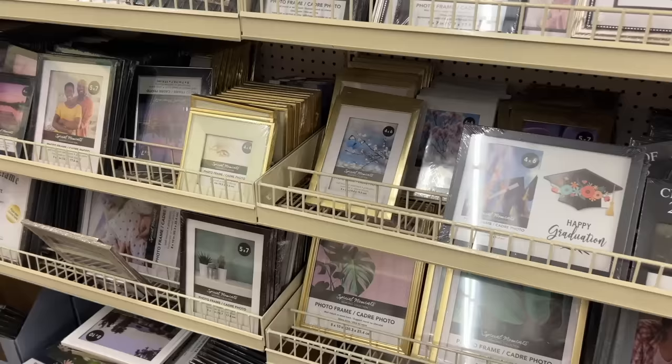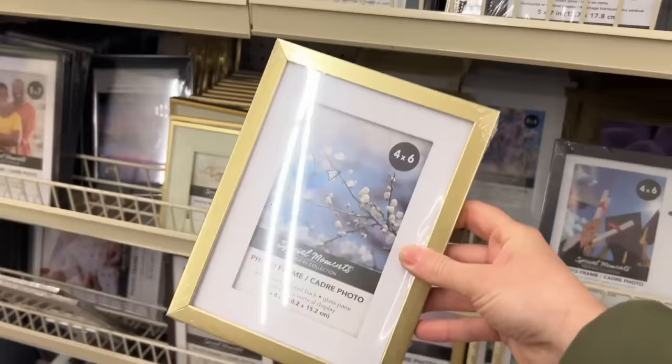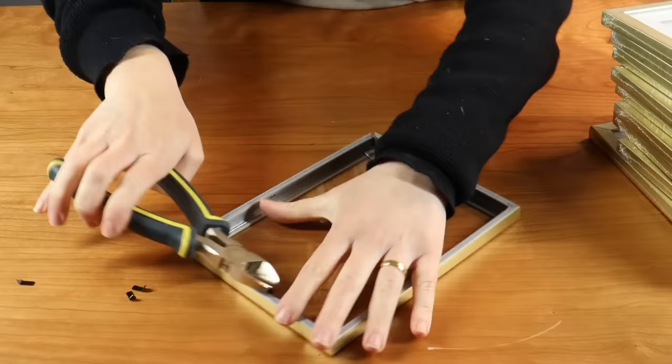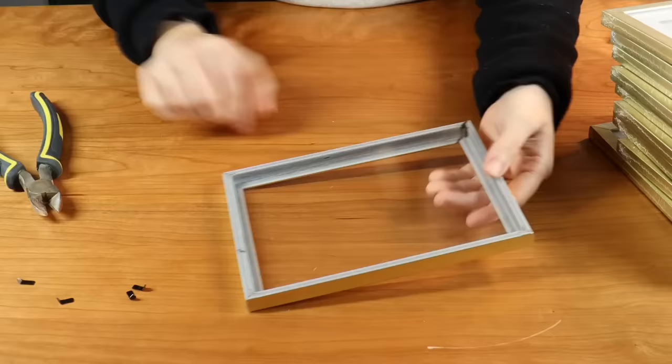The next time you're at Dollar Tree, make sure you head to their frame section and grab some of these gold frames. I'm going to come in with some wire cutters and pull out the black tabs that keep the backing on. Then I'm going to take out the glass and come with some E6000 and glue the glass inside the frame.